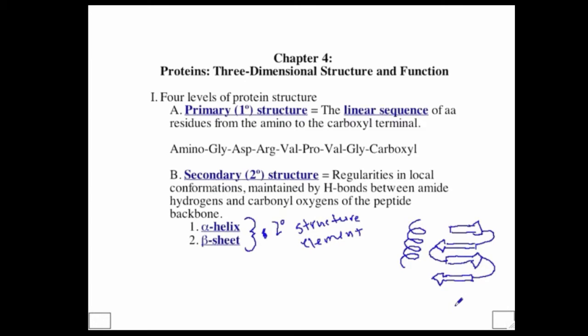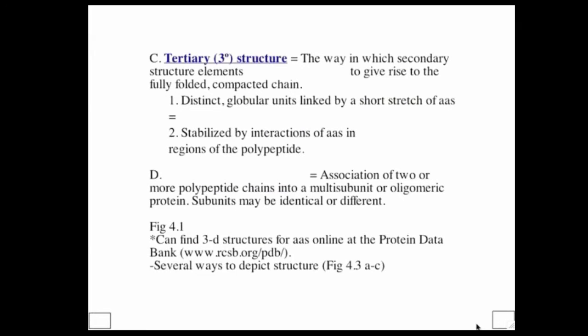The next level up is tertiary structure, which refers to the overall three-dimensional structure of the protein — how alpha helices and beta sheets interact with one another in 3D space, their overall fold. It is essentially the way in which secondary structure elements interact with one another, giving rise to a full three-dimensional, fully folded, compacted chain.